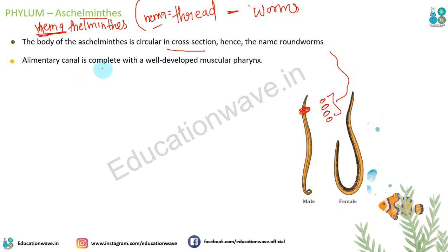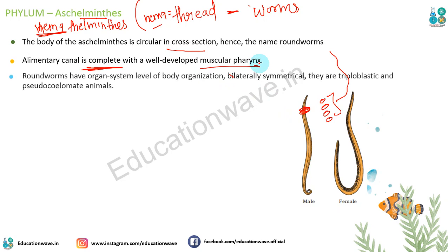Inki alimentary canal complete hoti hai - pehle waale Platyhelminthes mein complete nahi thi isliye unke paas flame cells the. Inke paas poora well-developed muscular pharynx hota hai. Round worms have organ system level of body organization because they have complete alimentary canal and well-developed muscular pharynx.